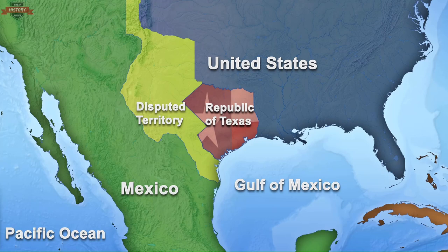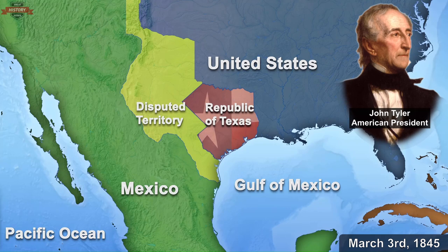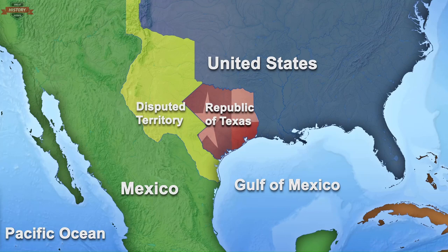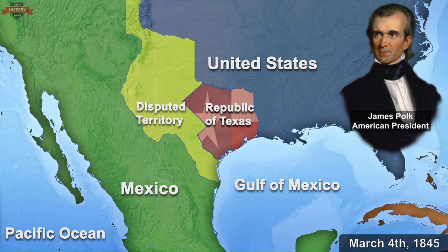On March 3, 1845, American President John Tyler sent a formal offer to Texas for it to be admitted into the American Union as the 28th state. This was his last full day in office. Next day, March 4, 1845, James Polk became the 11th American President. Polk was also in favor of annexing Texas, and also acquiring, by any means, other Mexican territories like New Mexico and California.